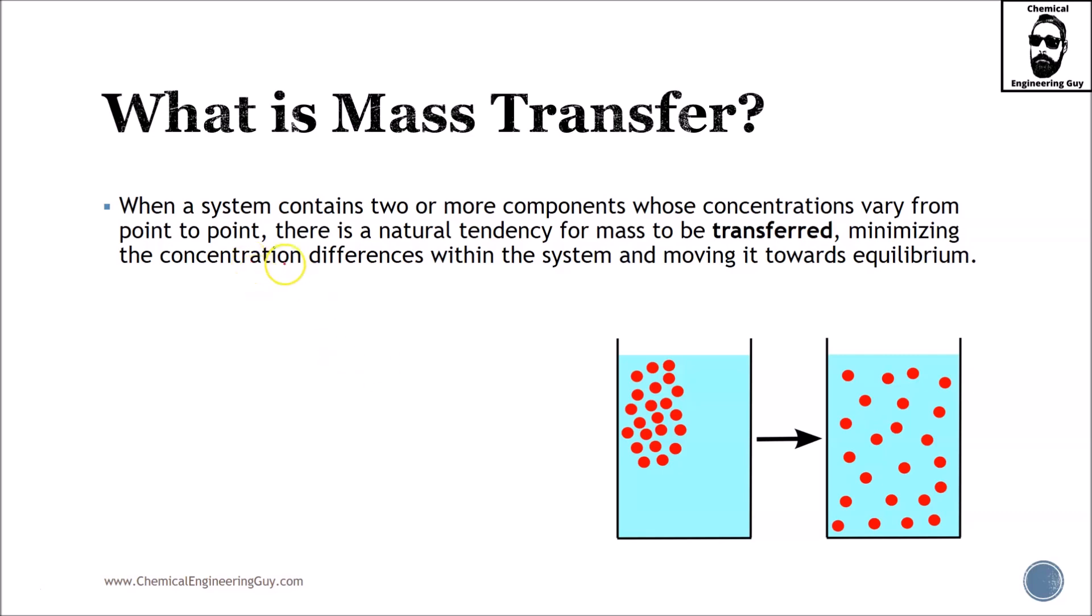Okay, so first try to imagine a system containing at least two or more components whose concentration vary from point to point. So before we even start, we are already adding space or dimensions. It's important now the position of the mass or component or concentration or molecule. And once again we need at least two components because one component per se will not make that much sense. You need to have at least two components.